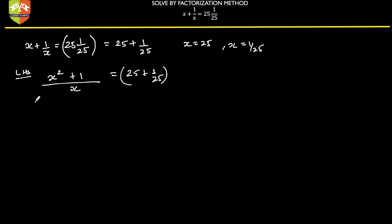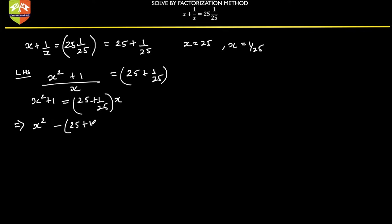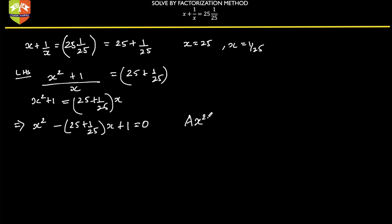Now let's cross multiply. So x squared plus 1 equals 25 plus 1 by 25, times x. Taking all terms to one side: x squared minus 25 plus 1 by 25 times x, plus 1 equals 0.